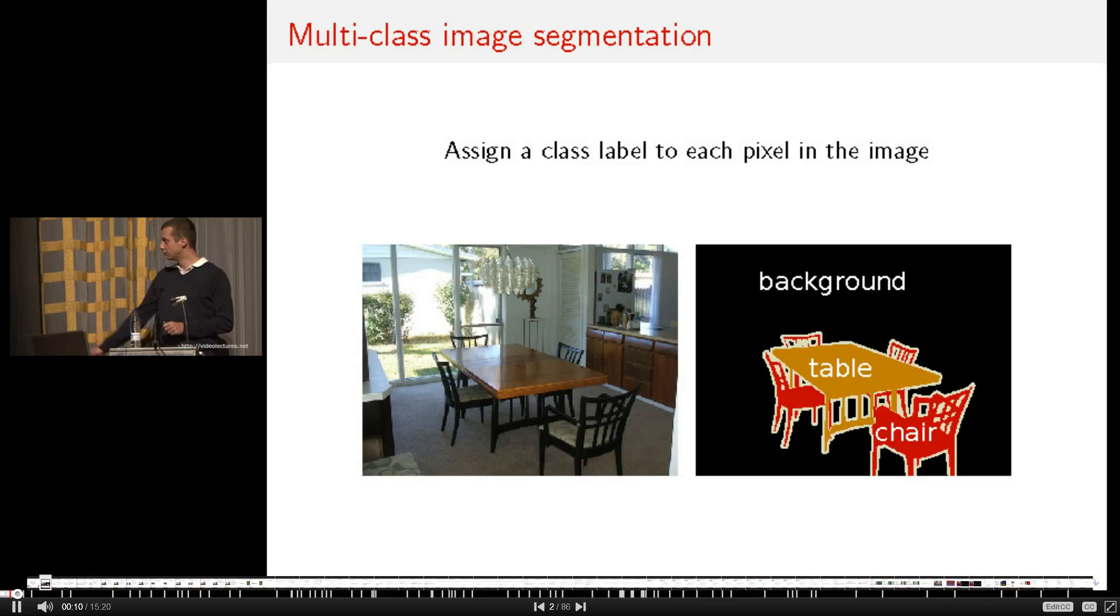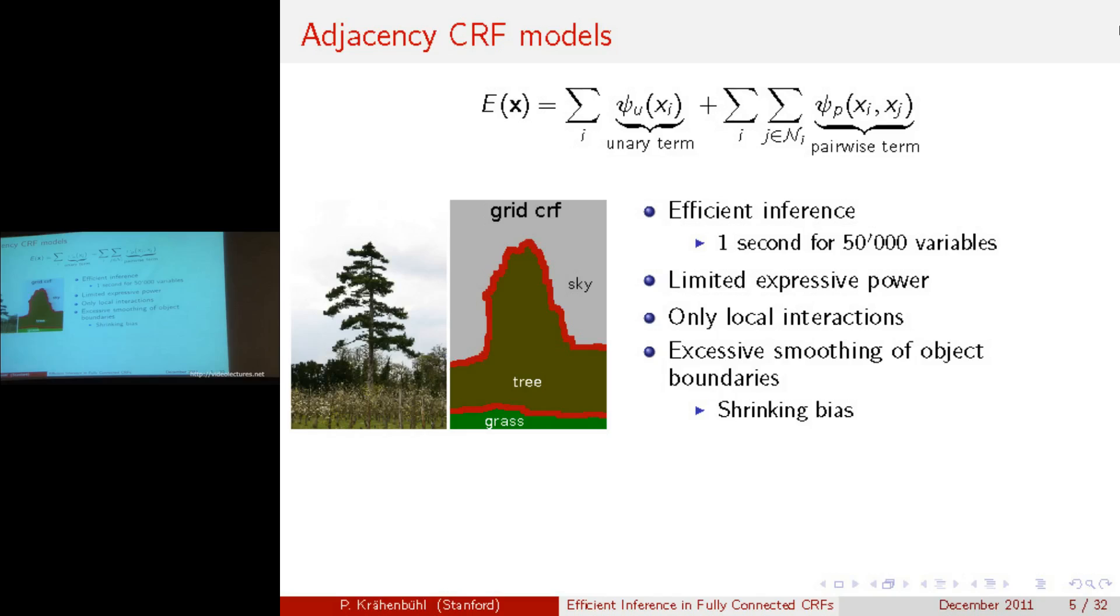Now inference in the simple grid structure or adjacency CRF models is fairly efficient. For example, graph cuts takes roughly a second to do inference in the image here on the side, which contains 50,000 variables. However, the expressive power of those grid structure models is very limited. This is mainly due to the fact that interactions can only be modeled over directly adjacent variables. The grid structure itself further leads to an excessive smoothing of object boundaries, as you can see on the image on the side here, and this excessive smoothing is also known as the shrinking bias.